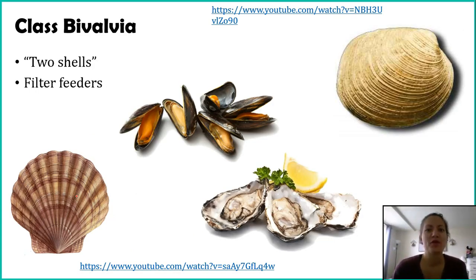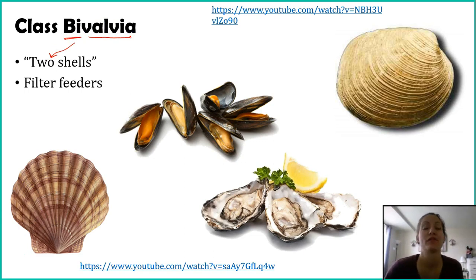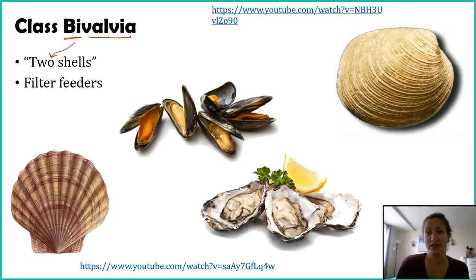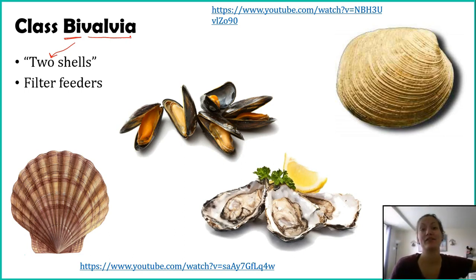Now let's talk about our first class. You've probably seen many of these organisms. Let's look at class Bivalvia. The root 'bi' refers to two. 'Valvia' refers to valves, which these organisms use to suck in and push out water. What bivalves do is filter feed — they're not hunting, but instead taking in water and pulling out algae, phytoplankton, zooplankton, and bacteria to eat, then pushing the extra material out of their bodies.